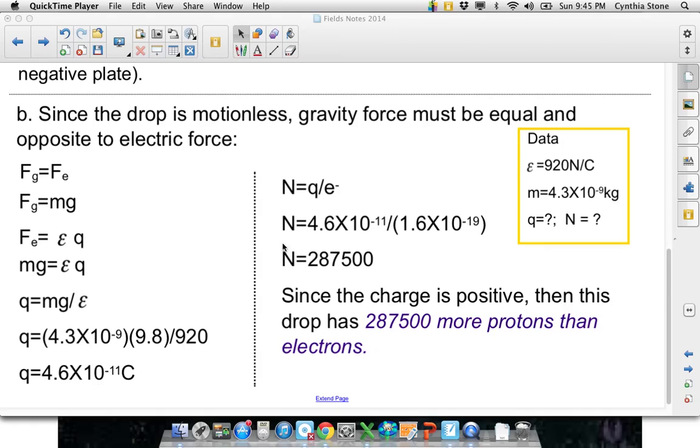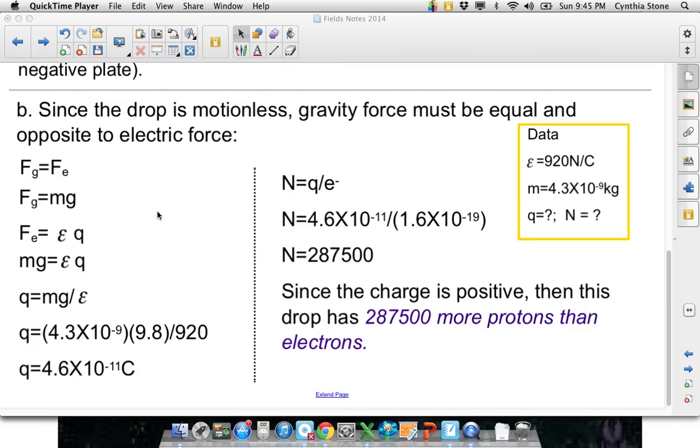We want to find the number of electrons. So, you just, or a number of extra protons, I guess. So, it'll be the charge divided by e is a symbol for charge on one electron. So, our charged water droplet must have 287,000 more protons and electrons. I'll let you write that down, and maybe think on that a bit, and we'll move on to the next one.